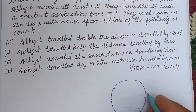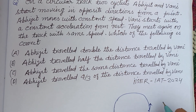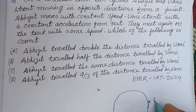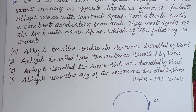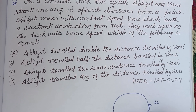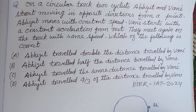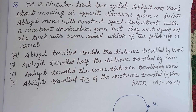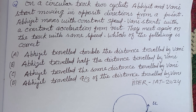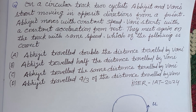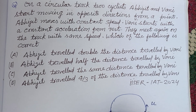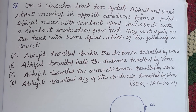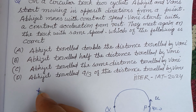Here is Avjit moving with constant speed u. Vani is moving with initial speed equal to zero and constant acceleration a. After time t, they meet at point Q. Let this point be P and this point be Q.